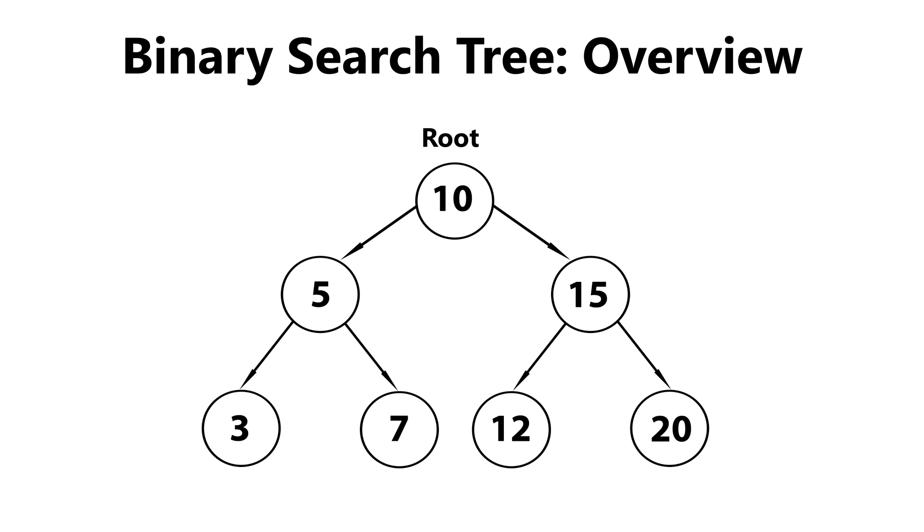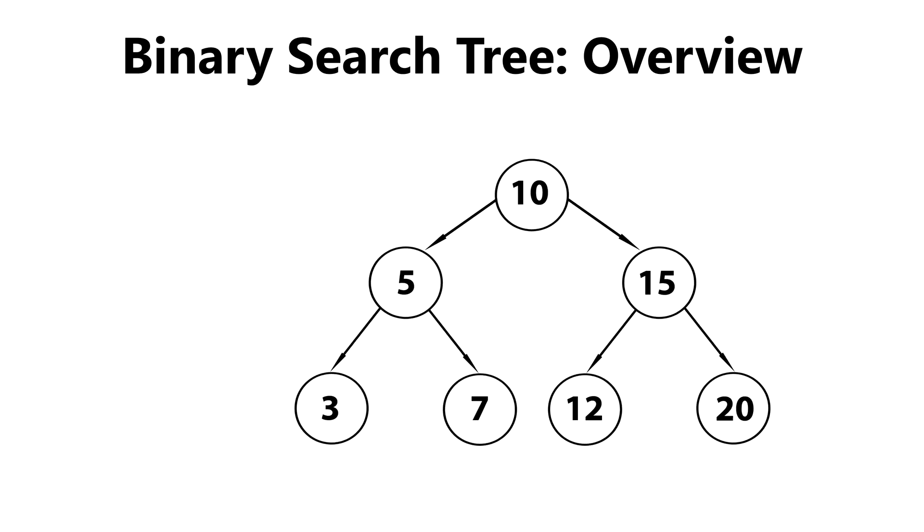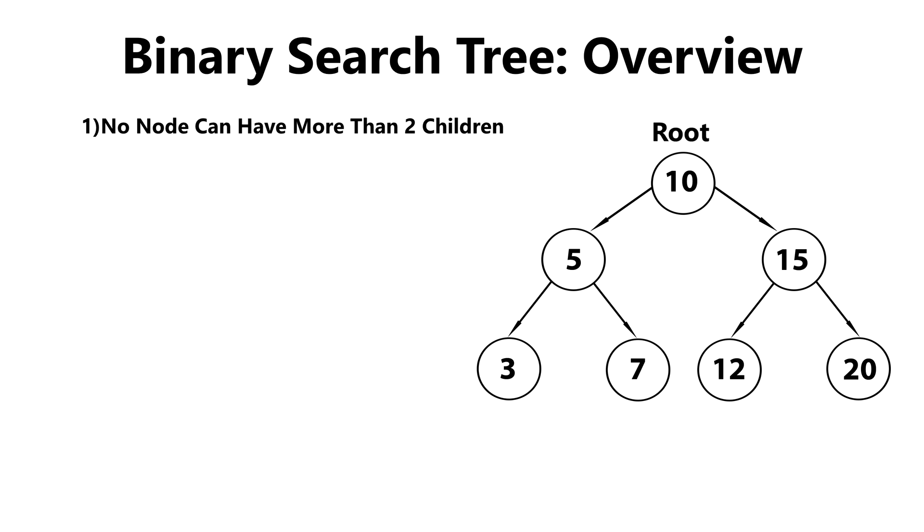So everything we talked about applies to trees in general. What are the properties that a binary search tree should follow? First, a binary search tree should have no node that has more than two children. So a node can have no child node, one child node, or two child nodes, but it cannot have three or more child nodes.